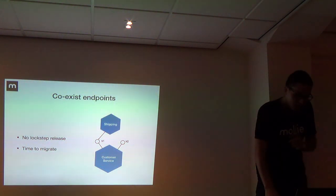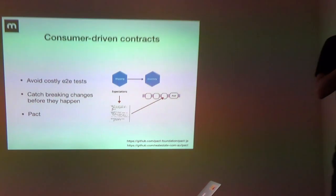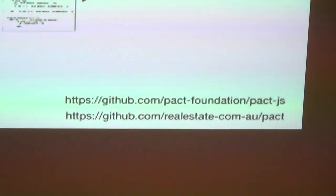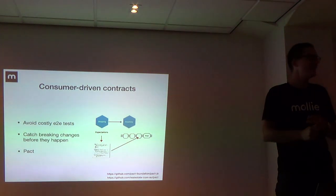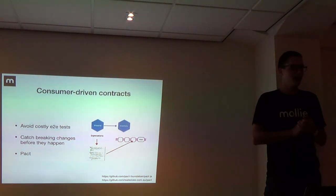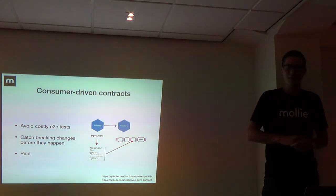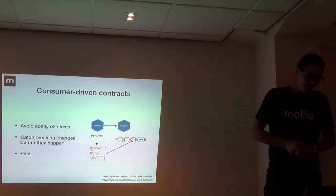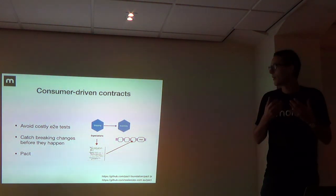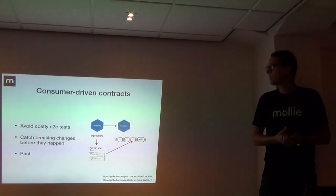Another thing I learned - which I thought was really cool - is consumer-driven contracts. They sort of set it against end-to-end tests. Consumer-driven contracts are about creating an expectation of what you expect from another microservice, making it explicit, and sharing it between microservices. Saying: hey customer service, I'm this service, I expect you to give me this response. If you don't give it, I will break. Pact is a tool created that facilitates exactly that.